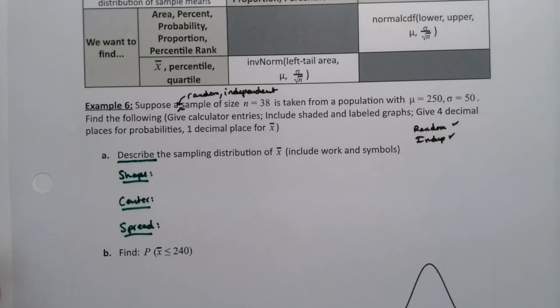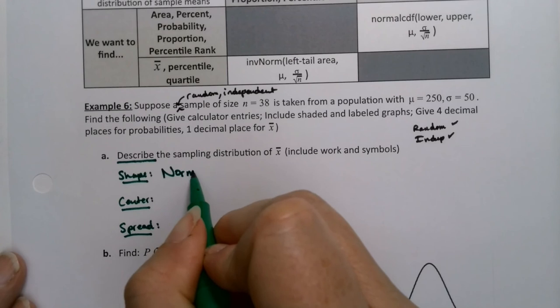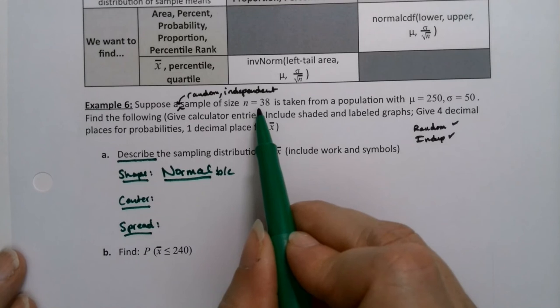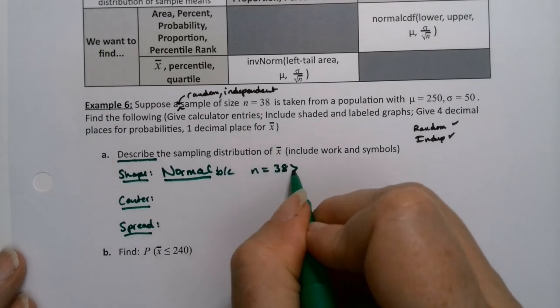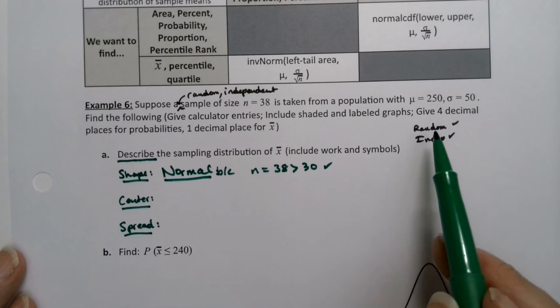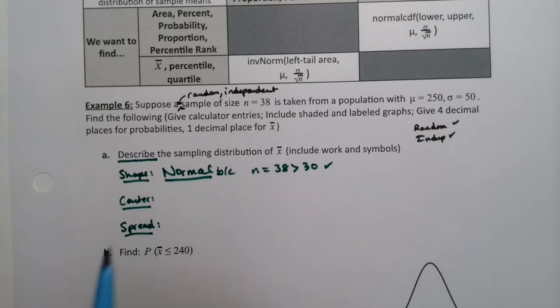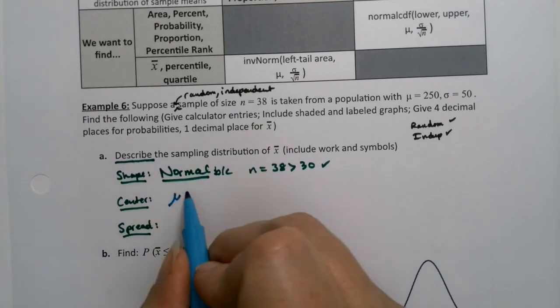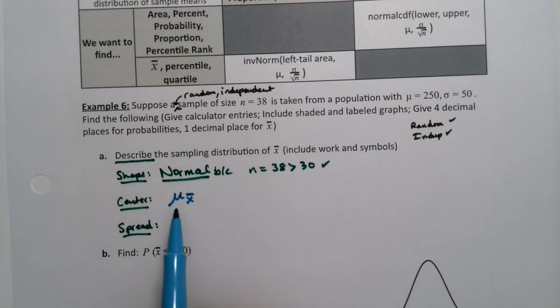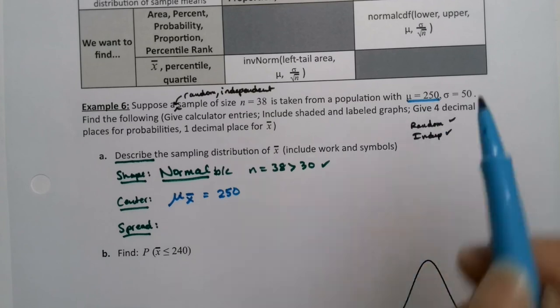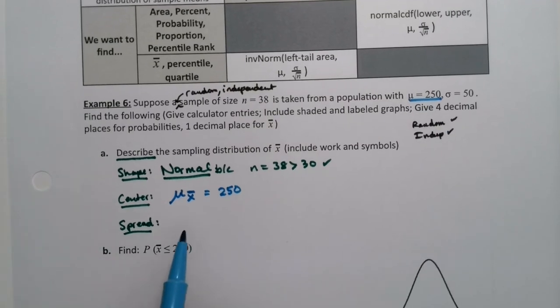We know normal, which is the shape, because n is 38. Because n equals 38 is greater than 30, so we have normal and we have random and we have independent. The center is the mean of the x-bars. We learned that the mean of the x-bars is equal to the mean, which is 250. The mean of the x-bars is the mean. So that's easy enough.